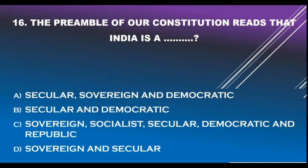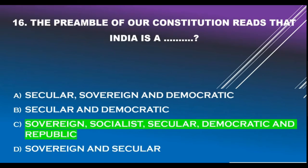Question number 16. The Preamble of our Constitution reads that India is: Option A - Secular, Sovereign and Democratic. Option B - Secular and Democratic. Option C - Sovereign, Socialist, Secular, Democratic and Republic. Option D - Sovereign and Secular. Correct answer is Option C: Sovereign, Socialist, Secular, Democratic and Republic.